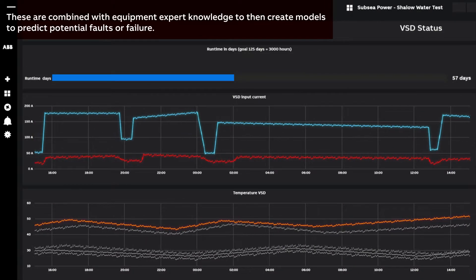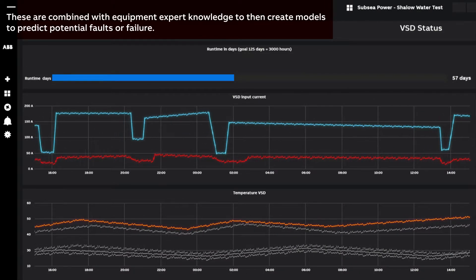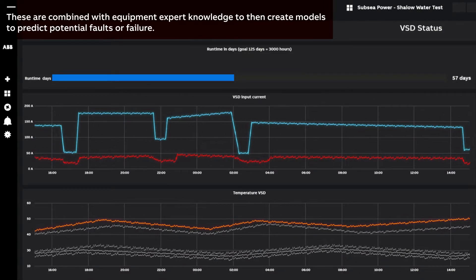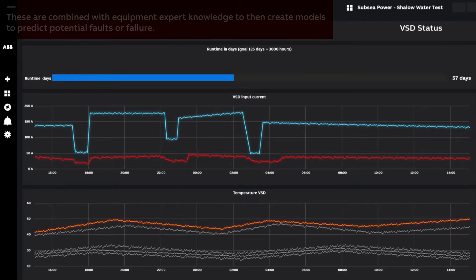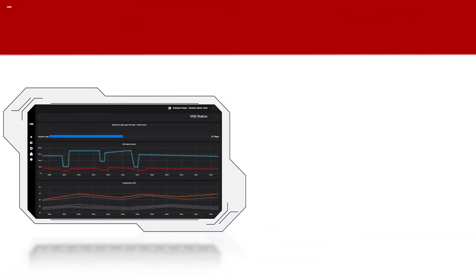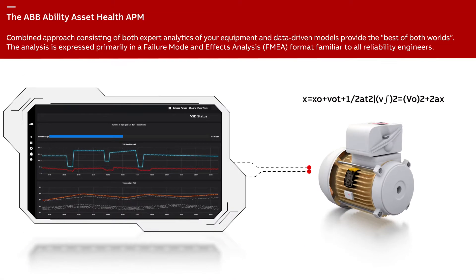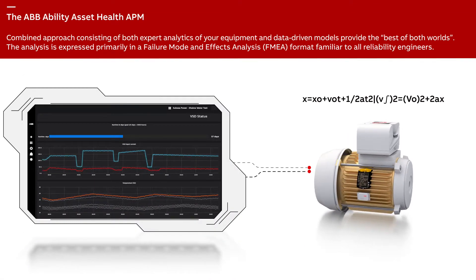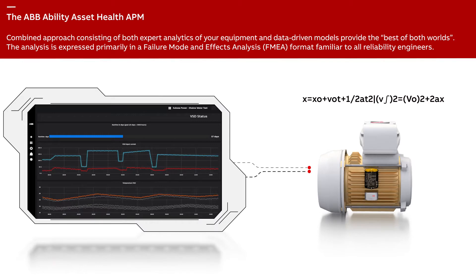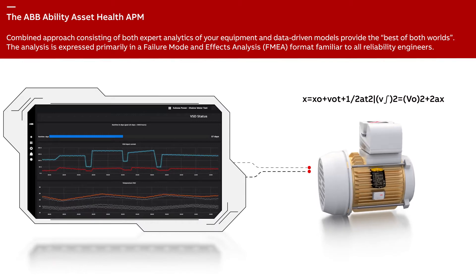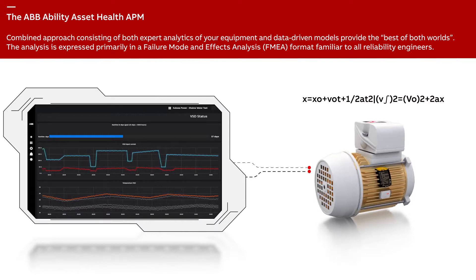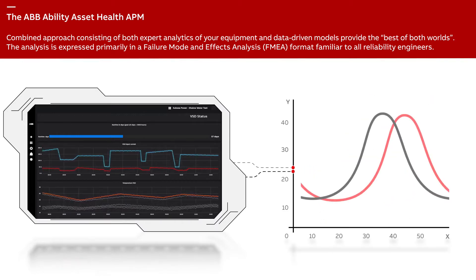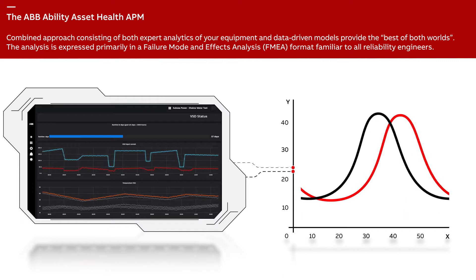These are combined with equipment expert knowledge to then create models to predict potential faults or failure. The ABB Ability Asset Health APM combined approach, consisting of both expert analytics of your equipment and data-driven models, provides the best of both worlds.